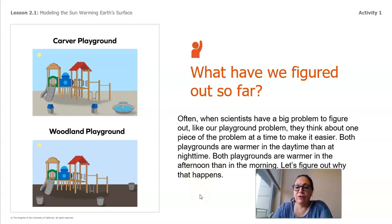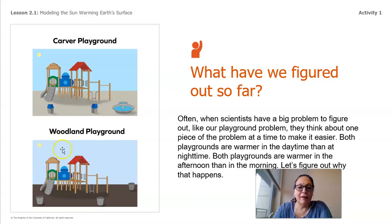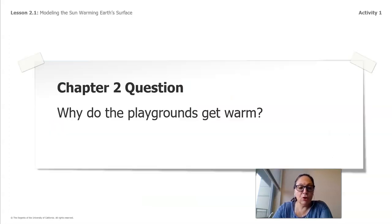We have already figured out a couple of things so far. When scientists have a big problem, like our playground problem, they think about one piece at a time. Both playgrounds are warmer in the daytime than at nighttime, and both playgrounds are warmer in the afternoon than in the morning. So the question for chapter two is: why do the playgrounds get warm?